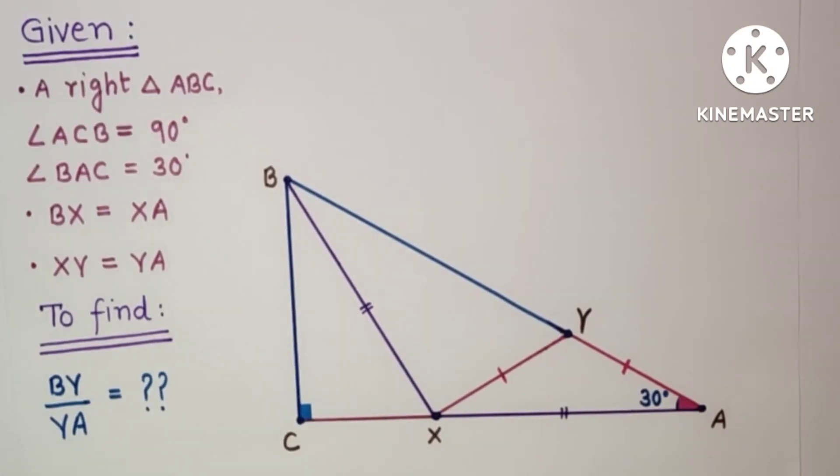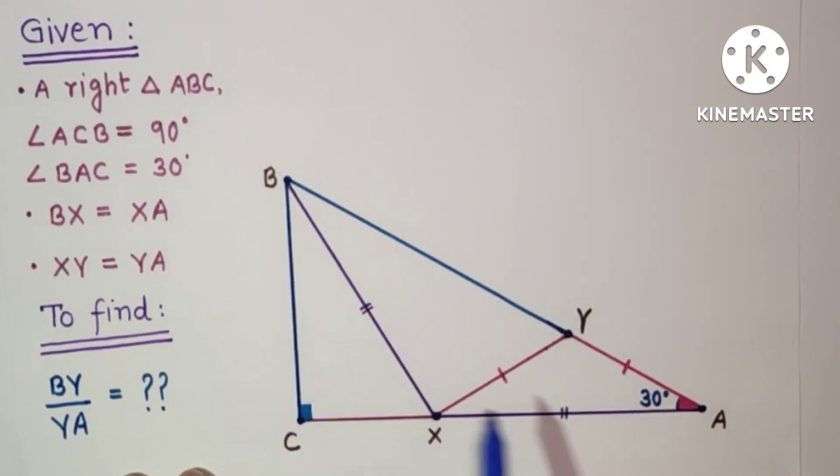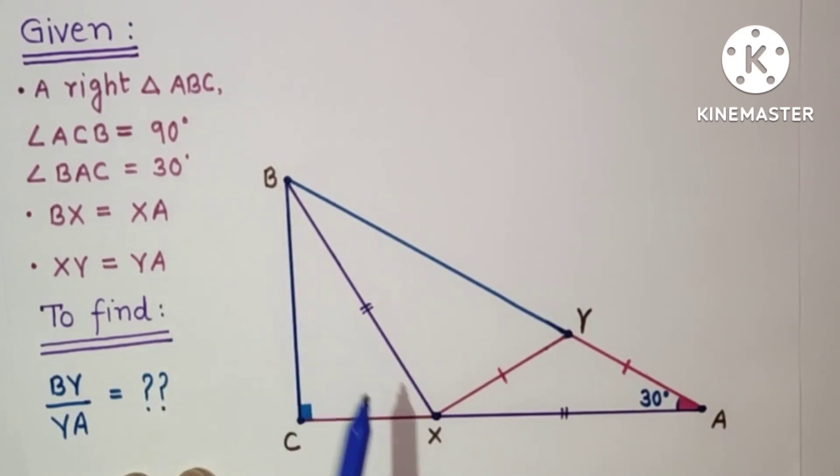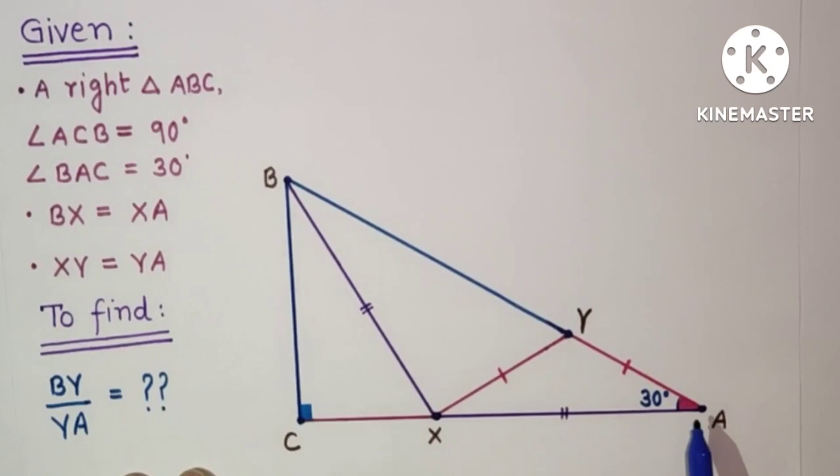In this question we are given a right angle triangle ABC in which angle ACB is 90 degrees. Angle CAB is 30 degrees given. We are also given that BX is equal to XA and XY is equal to YA.